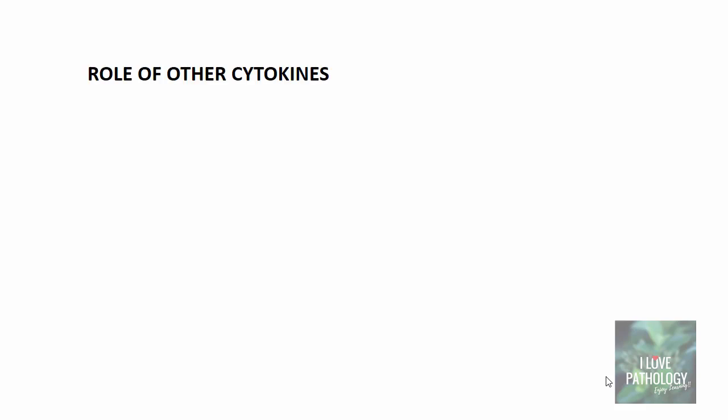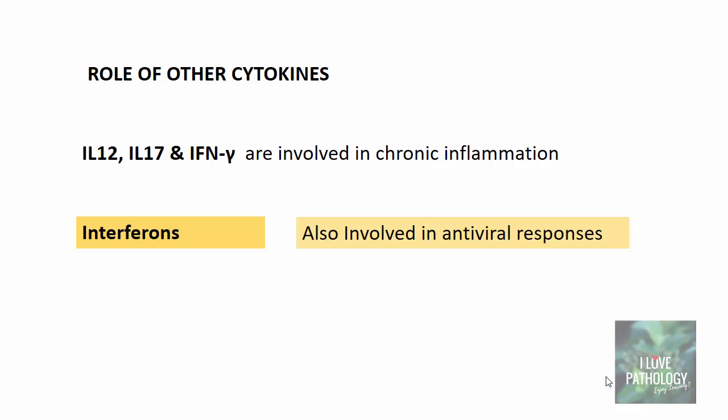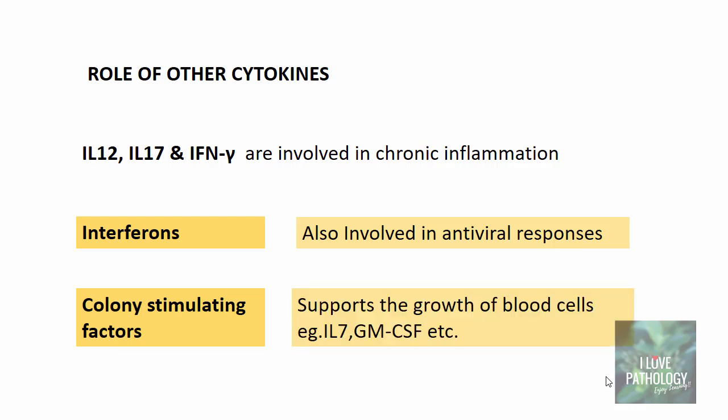Other cytokines include interleukin 12, interleukin 17, and interferon gamma, which are involved in chronic inflammation. All those we have studied so far are involved in acute inflammation, but remember that interleukin 17 also has a major role in chronic inflammation. Interferons are involved in antiviral responses, and colony stimulating factors support the growth of blood cells — for example interleukin 7 and granulocyte monocyte colony stimulating factor.